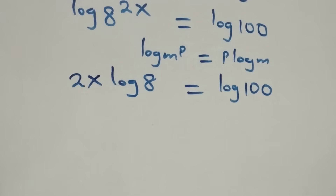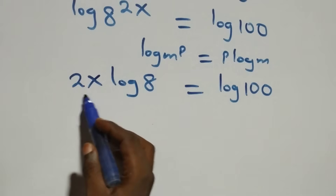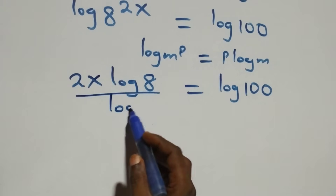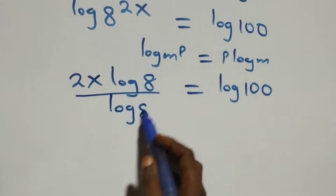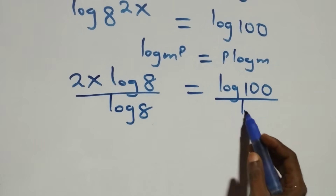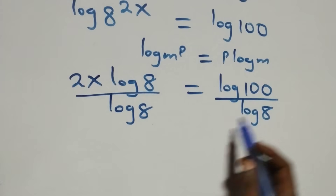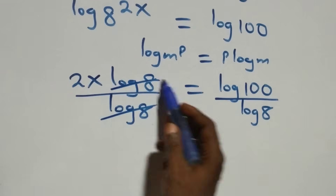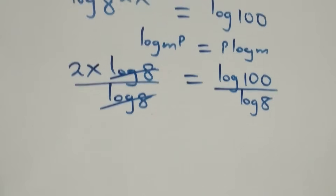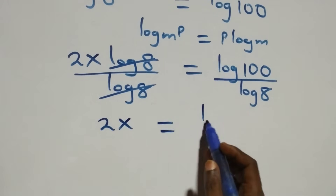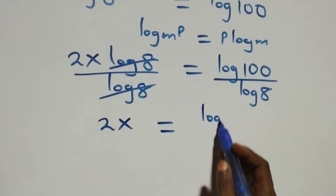The next step: divide both sides by log 8 — divide this side by log 8, and also divide this side by log 8. Here log 8 cancels with each other, and we are left with 2x equals log 100 over log 8.